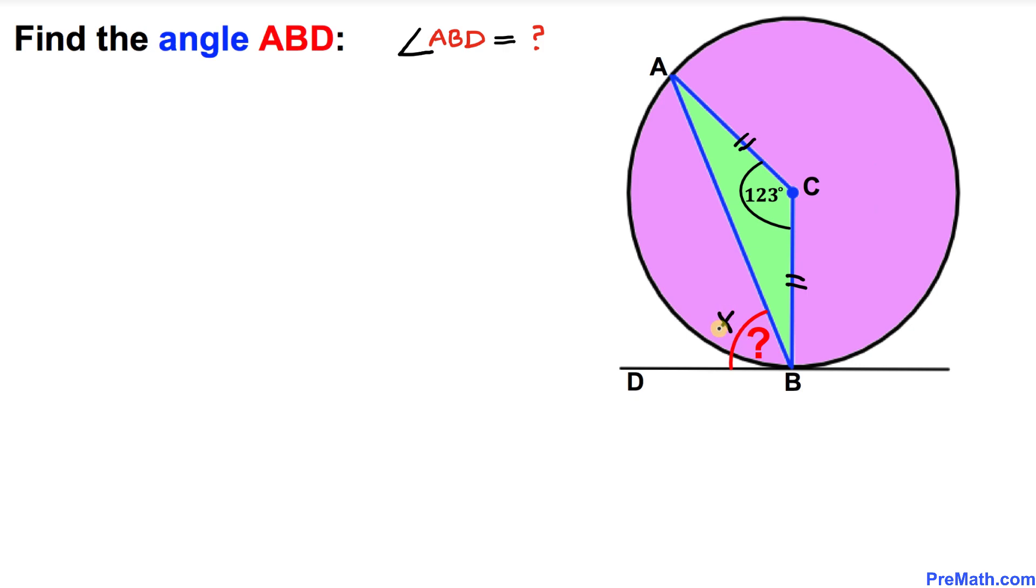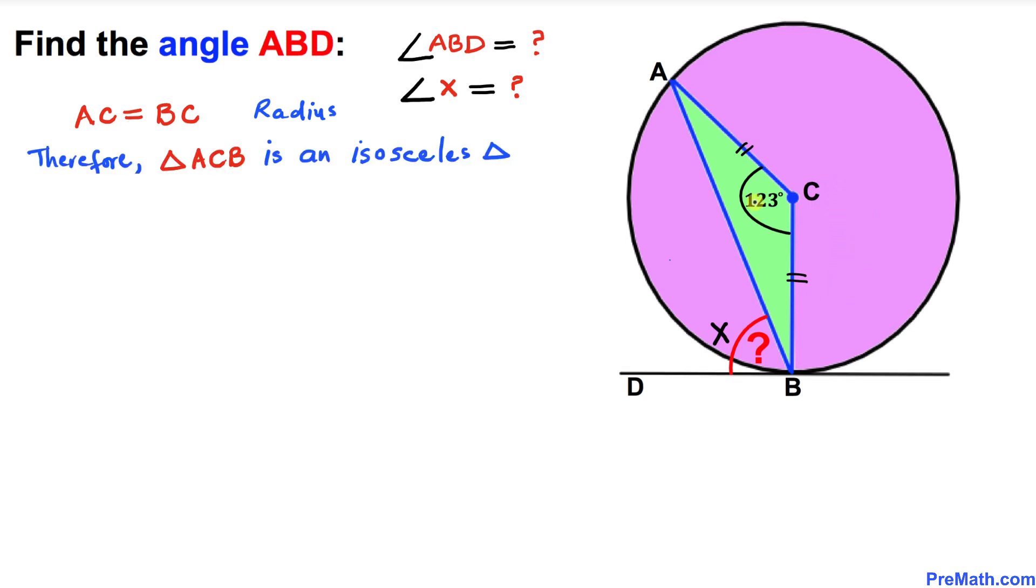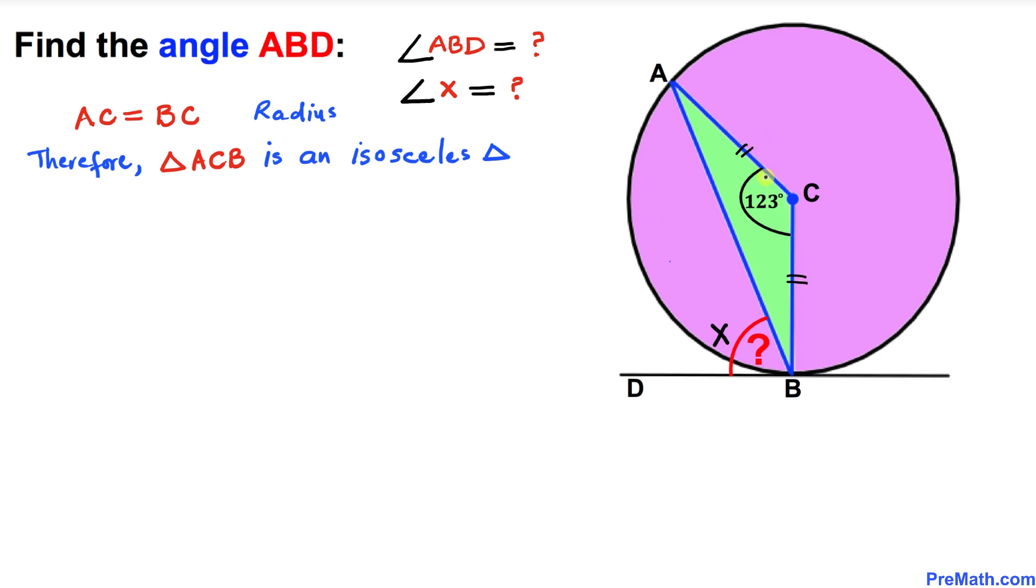Now we can see that line segment AC equals line segment BC since these both are the radii of this given circle. Therefore, this given green triangle ACB is an isosceles triangle since both of these sides are equal in length. Since triangle ACB is isosceles, this angle A is equal to this angle B.